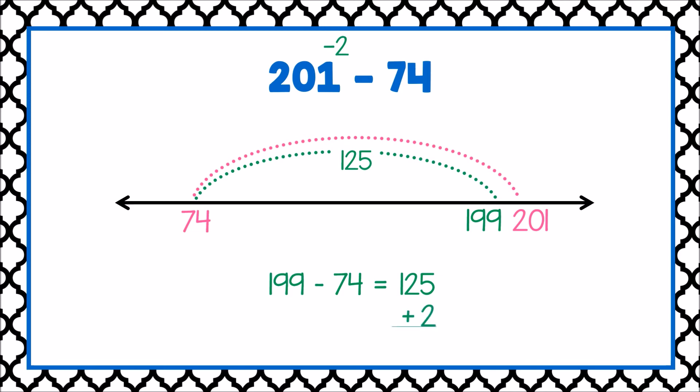I need to add that 2 back to my answer, making my final answer 127. So 201 minus 74 is equal to 127.